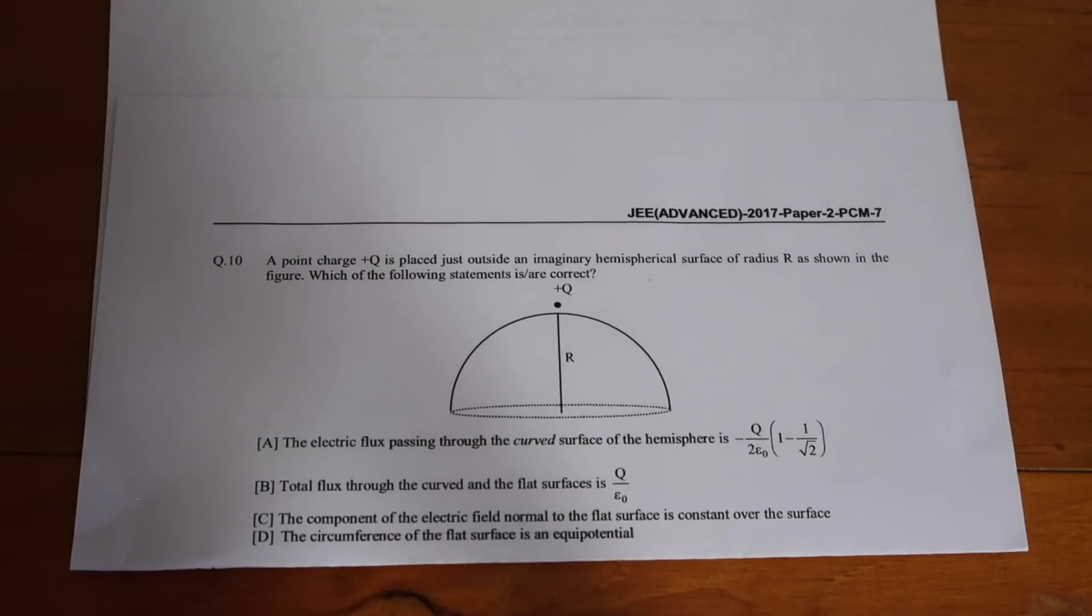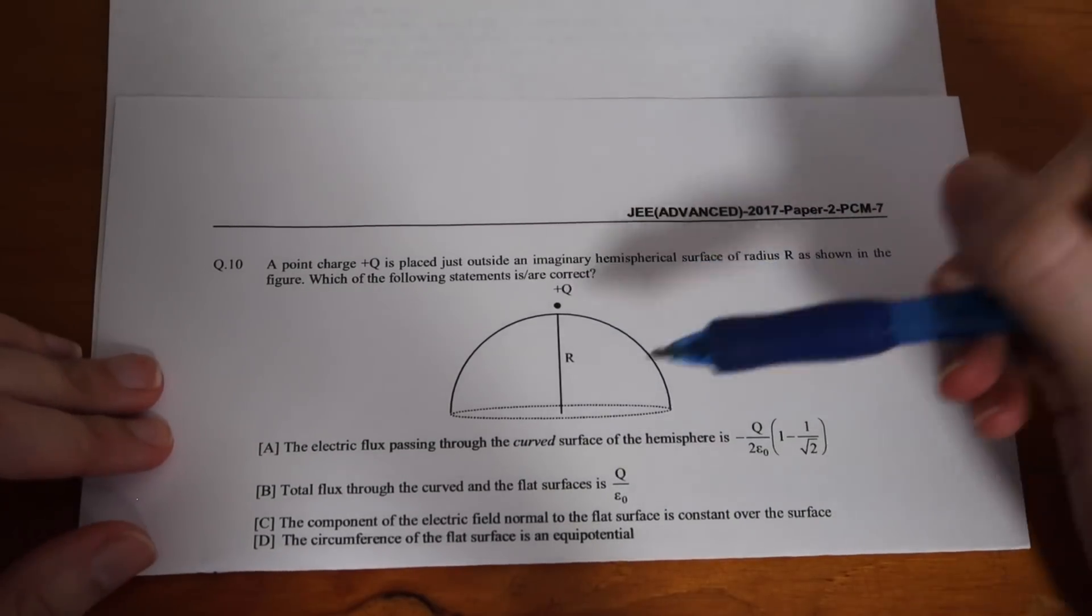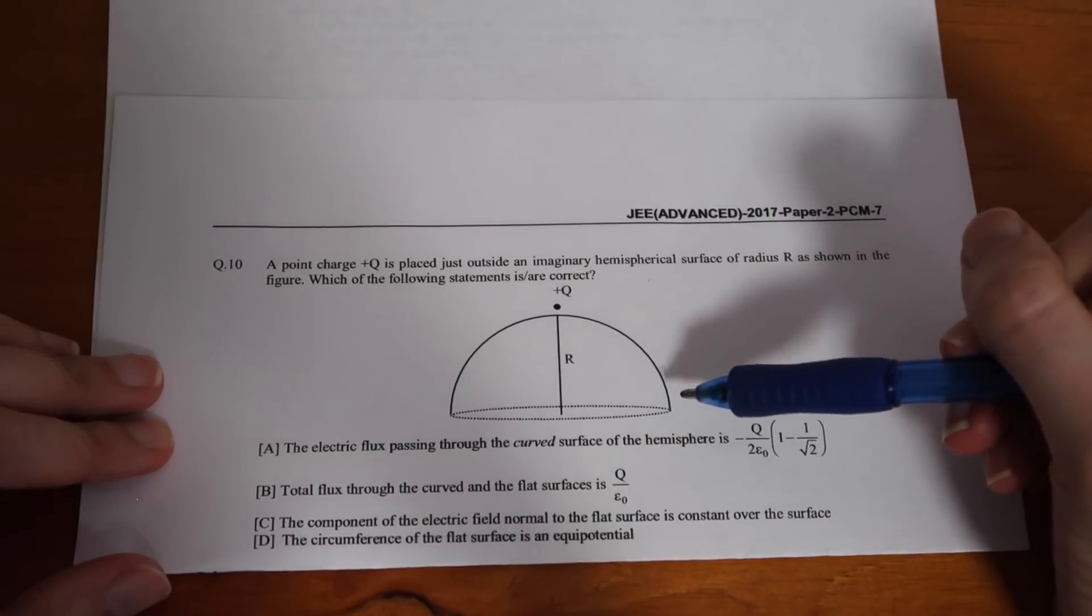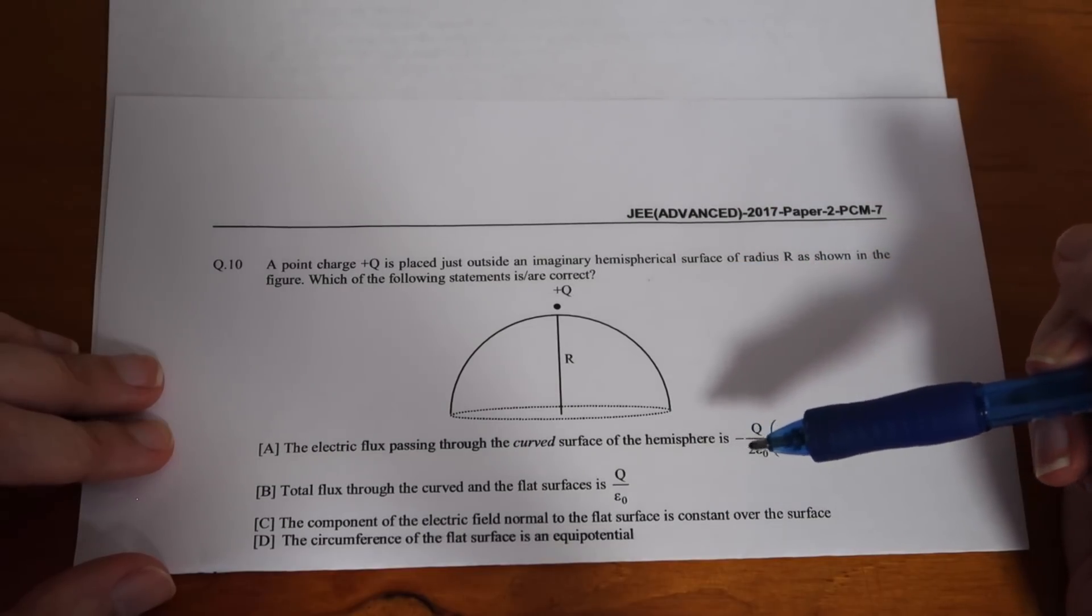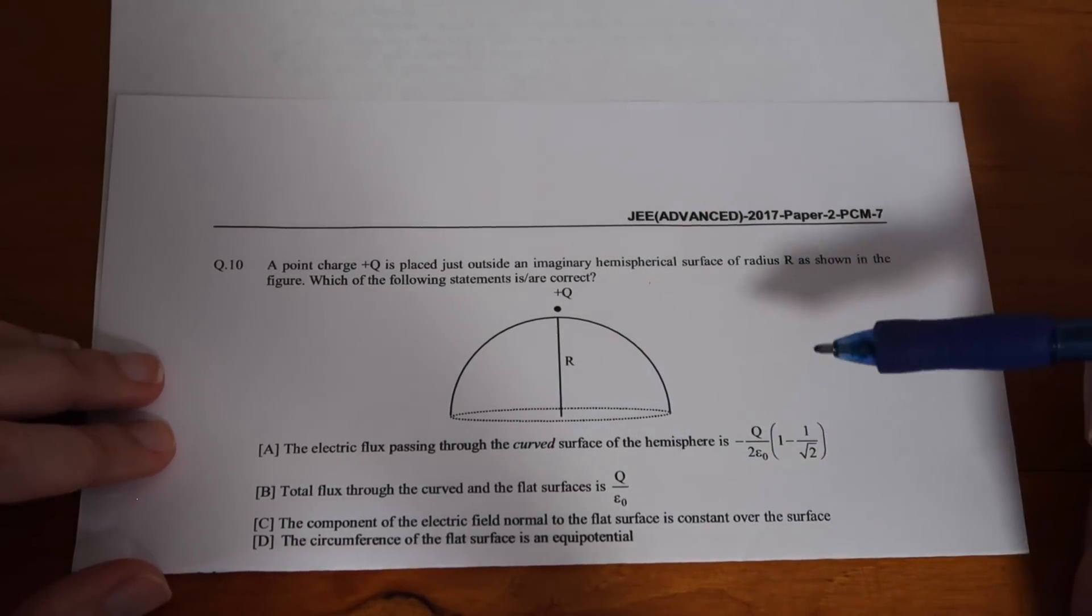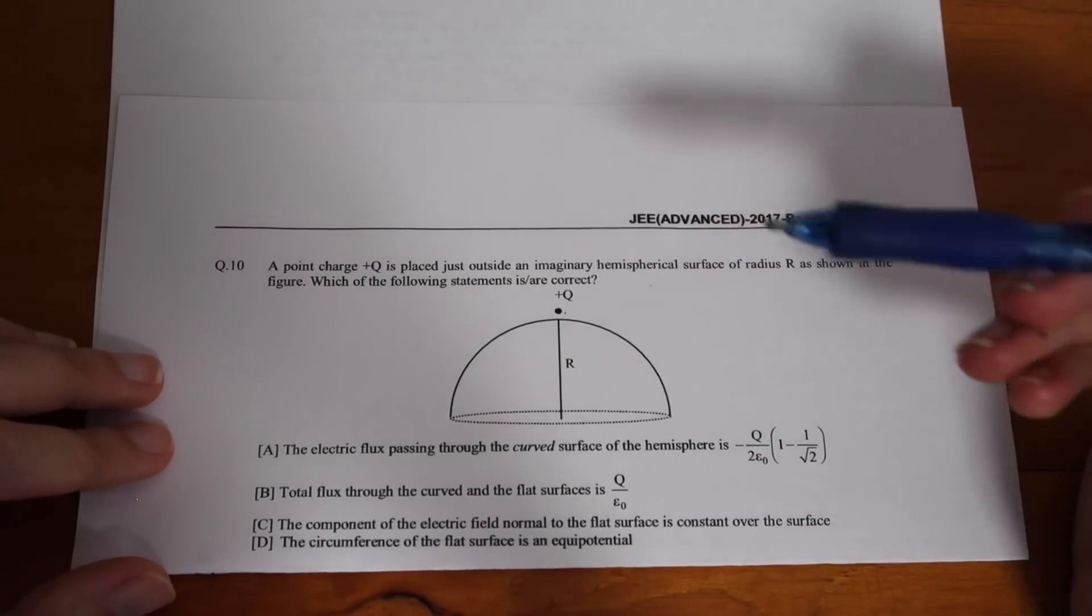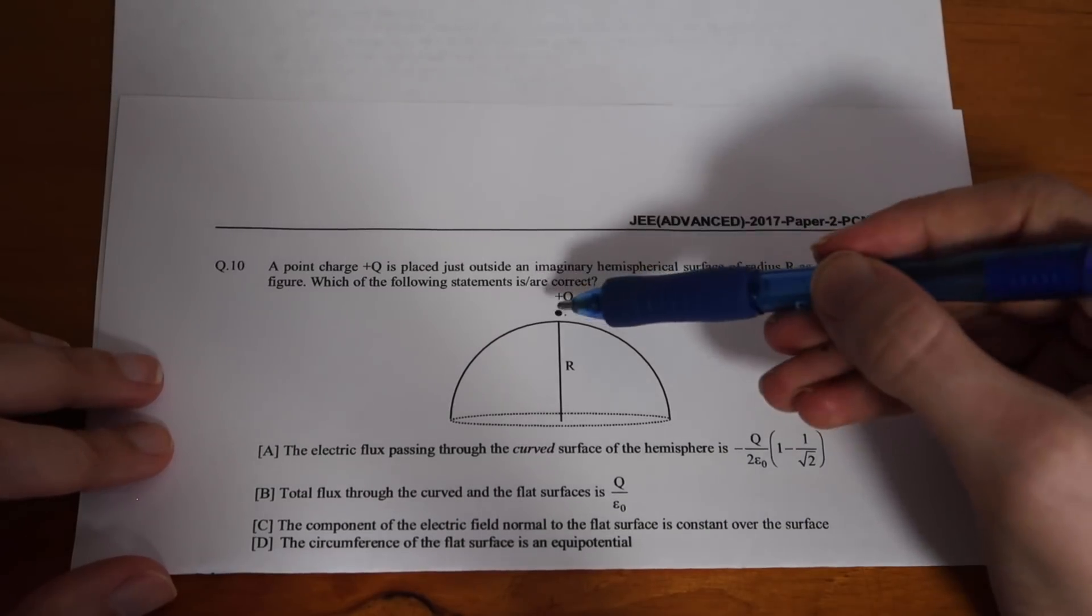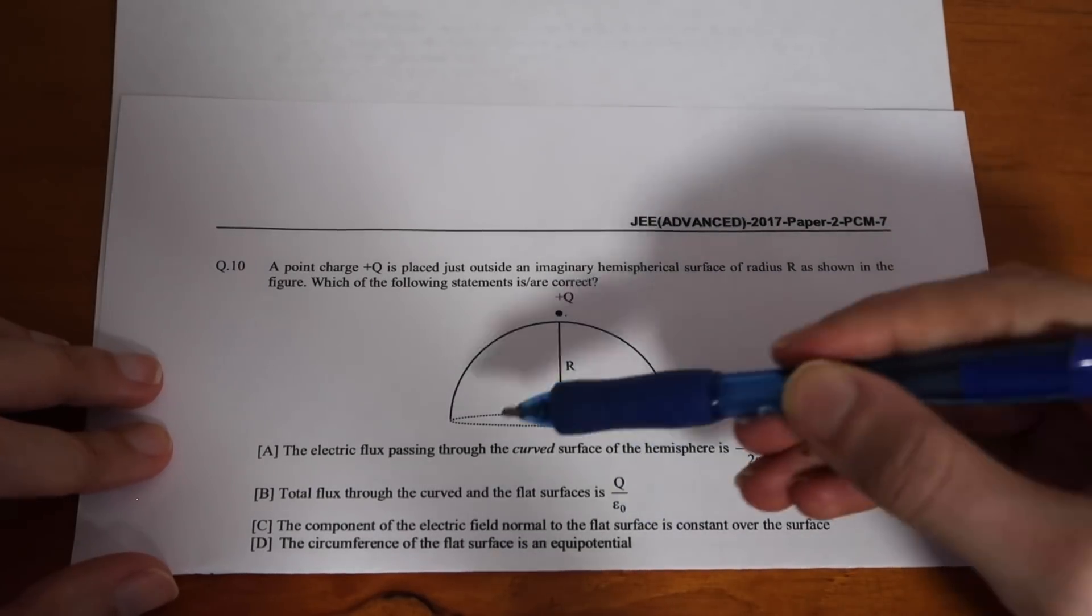So, this is what we're dealing with for our next question. It's from the 2017 paper. It's from paper 2. And, it's question 10 of the physics section. We have a point charge Q placed just outside an imaginary hemispherical surface of radius R. And, they're asking which of the following statements are correct. A, that the electric flux passing through the curved surface of the hemisphere is this value here.